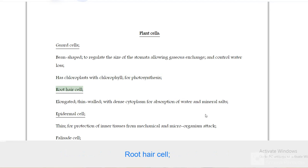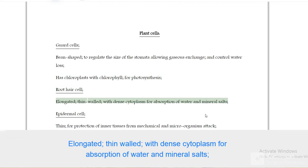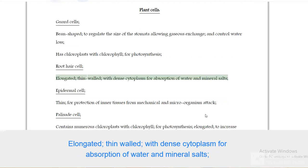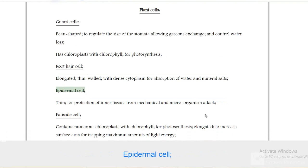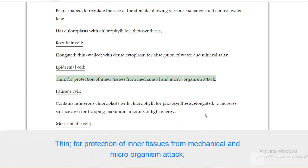Root hair cells are elongated, thin walled, with dense cytoplasm for absorption of water and mineral salts. Epidermal cell is thin for protection of inner tissues from mechanical and micro-organism attack.